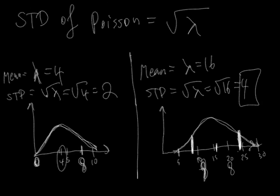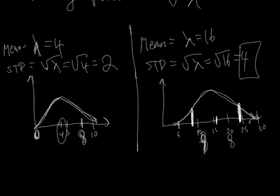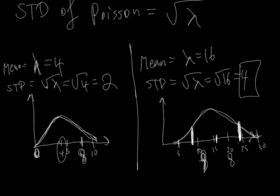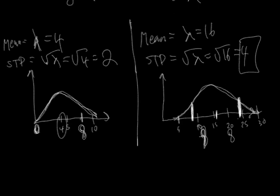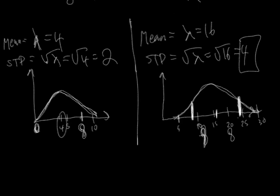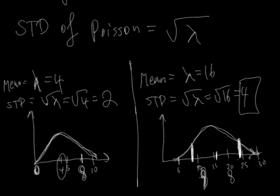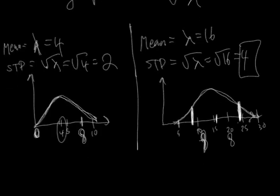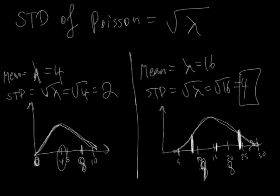Whereas when lambda is 4, we have a standard deviation of 2 and two standard deviations is 4 away from the mean. As your mean increases, your variance — and your standard deviation, which is the square root of the variance — increases as well. This has been an introduction to the Poisson distribution. Thanks for watching.